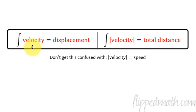If you take the integral of velocity, you get displacement. If you take the integral of the absolute value of velocity, it is equal to the total distance traveled. Total distance. Now don't get this confused with when we take the absolute value of velocity. If you just take the absolute value of velocity, you get speed. If you take the absolute value of velocity and integrate it, you get the total distance traveled. Alright, get those down. Pause if you need to at this point.